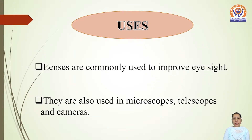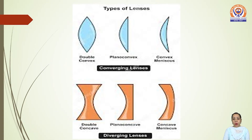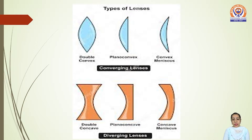Now, what are the uses of lenses? Lenses are commonly used to improve eyesight. They are also used in microscopes, telescopes, and cameras. Now, types of lenses: converging lenses include the double convex lens, planoconvex lens, and convex meniscus lens. Diverging lenses include the double concave lens, planoconcave lens, and concave meniscus lens.